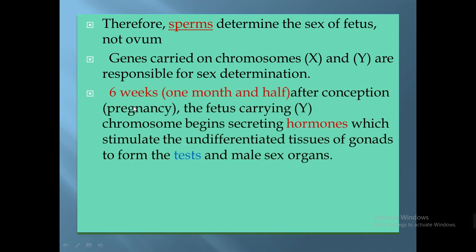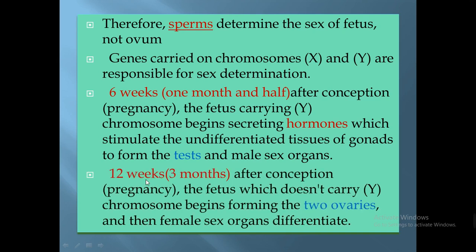After six weeks from pregnancy — that is, one month and a half — the fetus will begin secreting hormones which stimulate the undifferentiated tissues of the gonads to form the testis and male sex organs. After 12 weeks, or about three months from pregnancy, the two ovaries are formed, and the sex of the fetus can be determined.